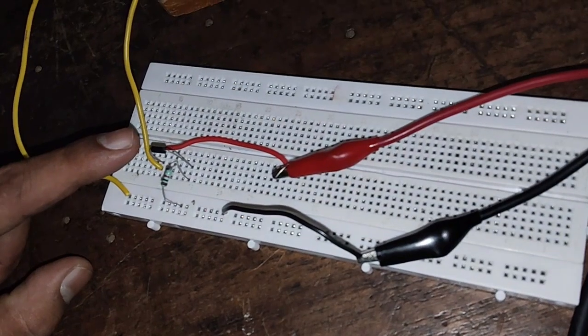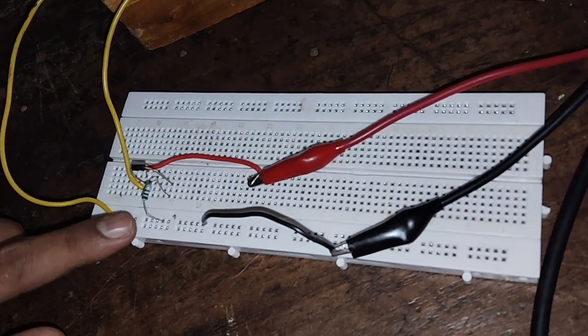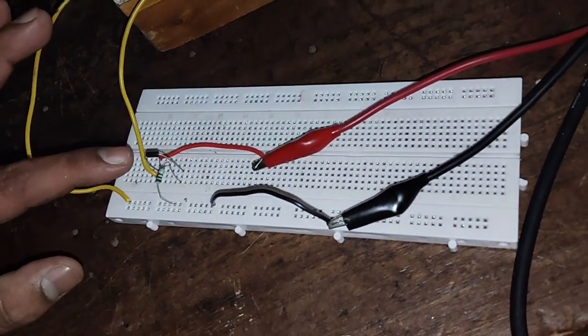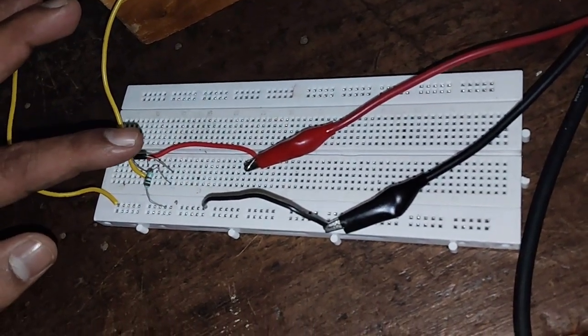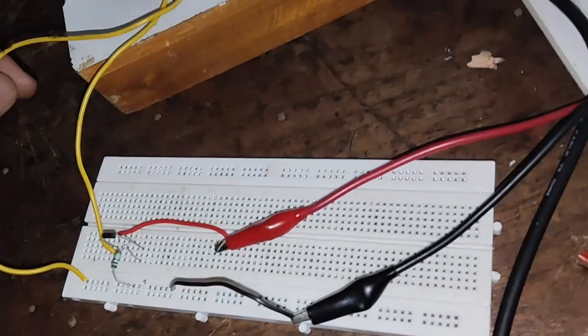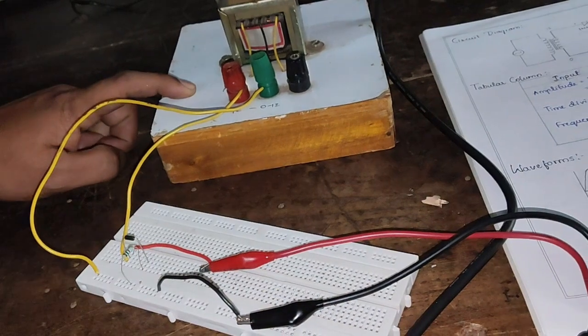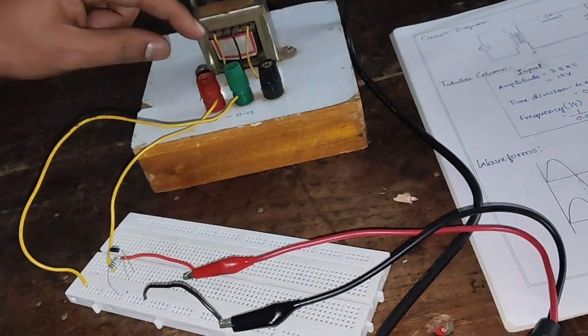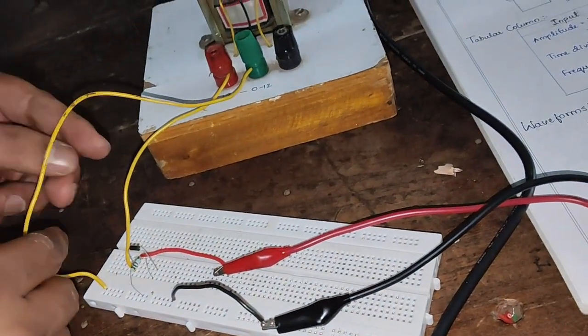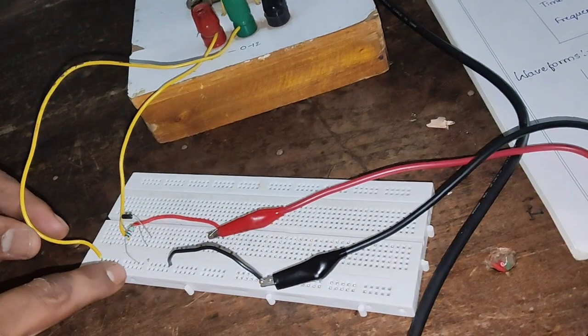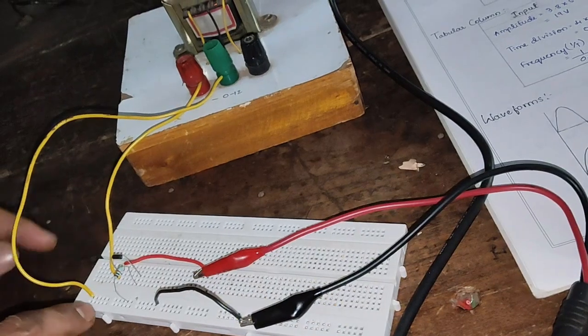This circuit has a resistor, that is a carbon resistor with value 1 kilo ohm as per the circuit diagram. The diode is connected to one point of the transformer. This is a center tap transformer 12-0-12. We have to connect the input of this circuit - one wire is connected to the diode and one wire is connected to ground or to the resistor. Once we apply the input, we obtain the output at this resistor.